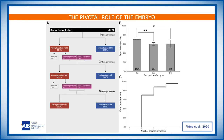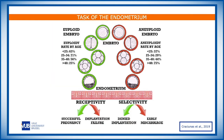We cannot underestimate the impact of the embryo. The embryo and the quality of the embryo is of crucial importance, as has been shown very recently in a nice paper published in Fertility and Sterility, in which they show that if you have the potential to transfer three successive euploid blastocysts, you reach a cumulative implantation rate of 95%. This shows us that the embryo has a pivotal role in giving implantation.